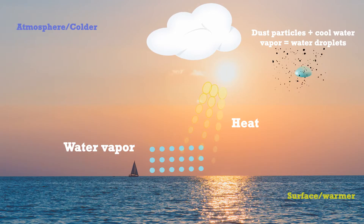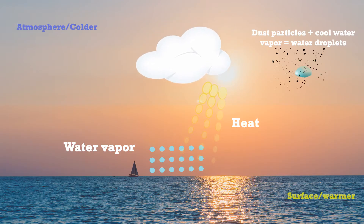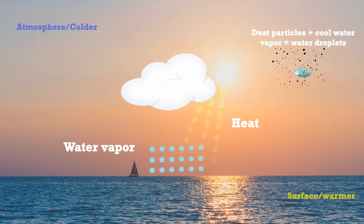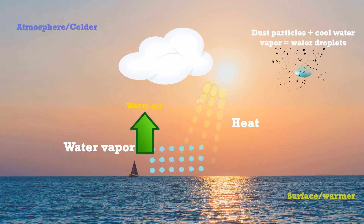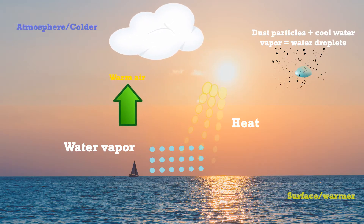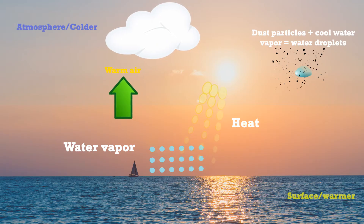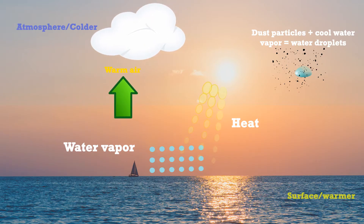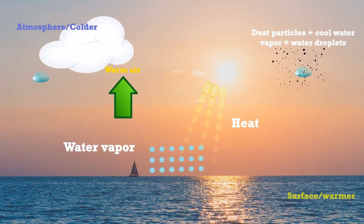Clouds do not simply fall out of the sky. They are so light that warm air coming upwards from the surface pushes them further upwards. The clouds move with the wind, continuing to collect more water droplets.